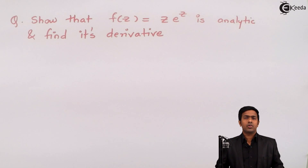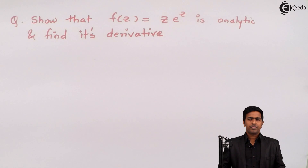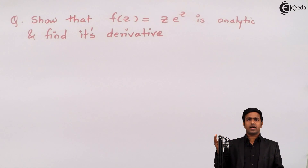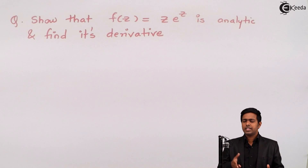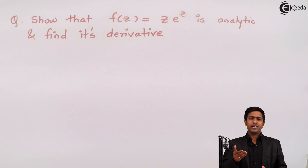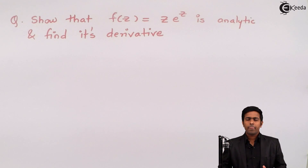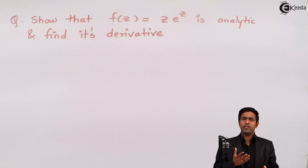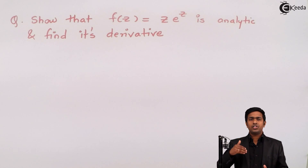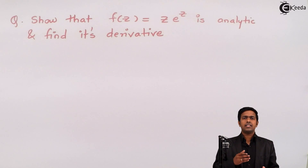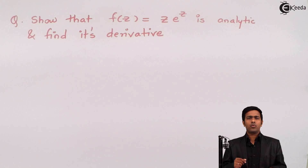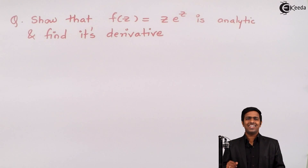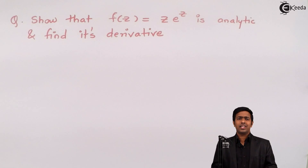Now f(z) is given in terms of z, where z is a complex number. We have a choice: we can represent z as x + iy, the Cartesian form, or as re^(iθ), the exponential form. When using x + iy, we apply the Cauchy-Riemann equations in Cartesian coordinates; when using re^(iθ), we use polar coordinates. Here, I am going to use Cartesian coordinates.